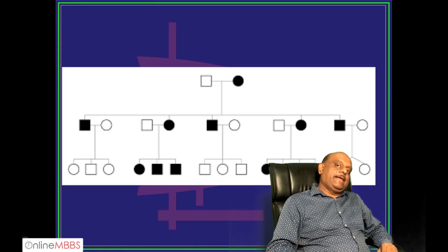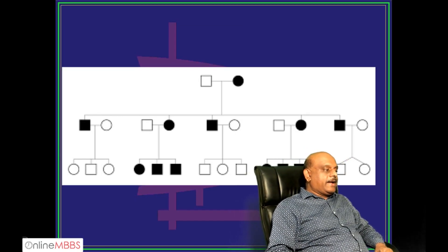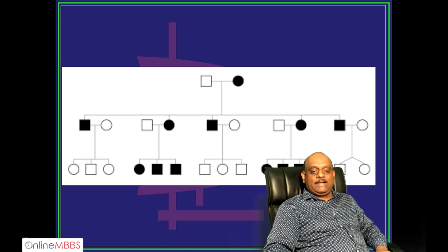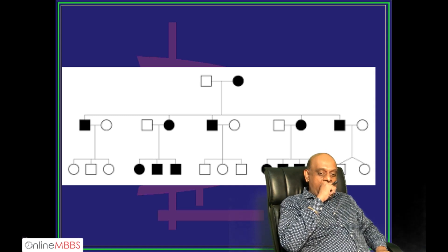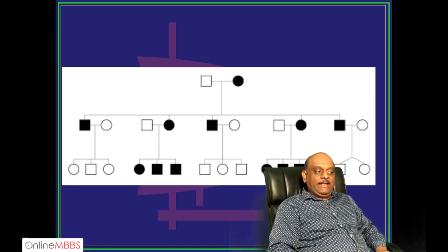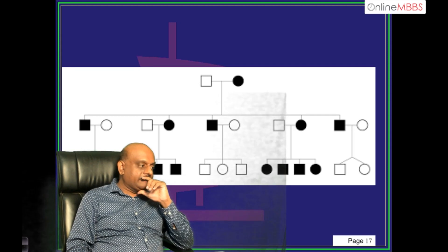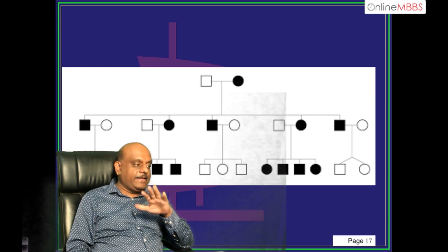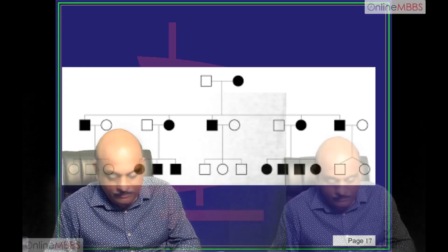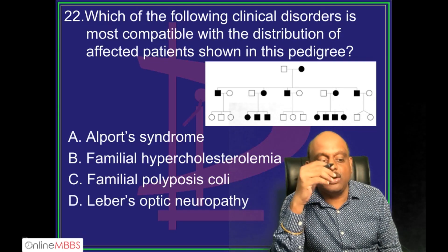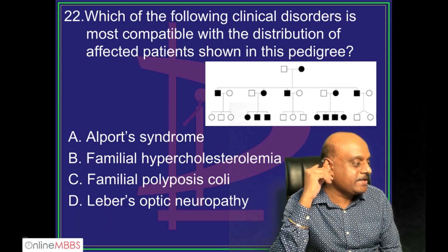Aapko ek pedigree dikhaayenge — dil laga ke dekho pedigree ko. What type of inheritance pattern is it representing? Give one confident answer. If you understood the inheritance pattern, you can answer. Idhar kya khas hai? Ammi jaan agar affected hai toh unke bete ko aa raha hai. Agar abba jaan affected hai toh woh next generation mein transmit nahi kar raha.